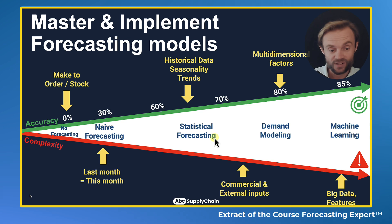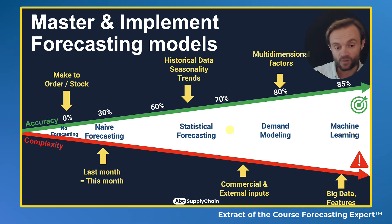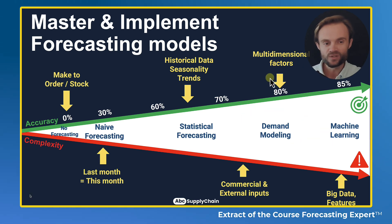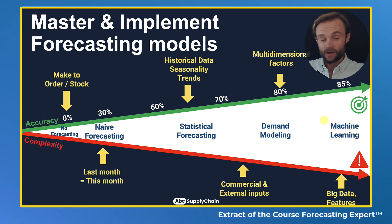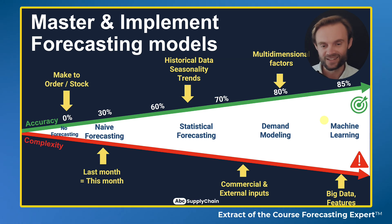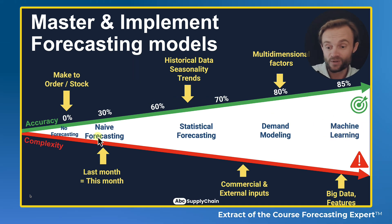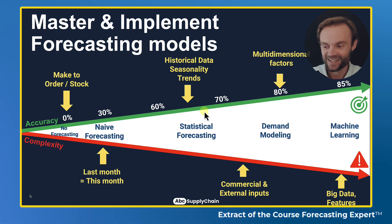Then you can enrich your forecast by adding commercial or external inputs — for example, including upcoming promotions or correcting past anomalies to improve future forecasts. After that comes demand modeling, using multi-dimensional factors. The last step is machine learning, where you feed the model and it learns by itself, finding a kind of secret formula by multiplying random numbers to arrive at a good solution. However, machine learning can be very complex — you need a lot of data and expertise. Without those, you could actually get better results with naïve or statistical forecasting.